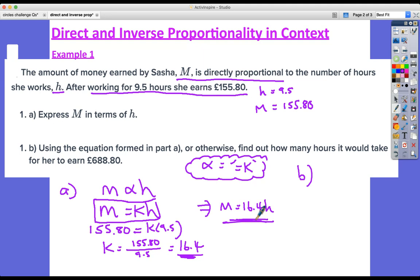So part b. Now we know this, this is our key to answering part b. Using the equation formed in part a or otherwise, find out how many hours it would take for her to earn £688.80. So it's giving us the value of M here, 688.80, and it's our job to find how many hours worked given the equation. So let's put this value into the equation: 688.80 equals 16.4h. Straightforward, we just need to divide 688.80 divided by 16.4 to find the number of hours that she has to work. So 688.80 divided by 16.4 equals 42. 42 hours work.